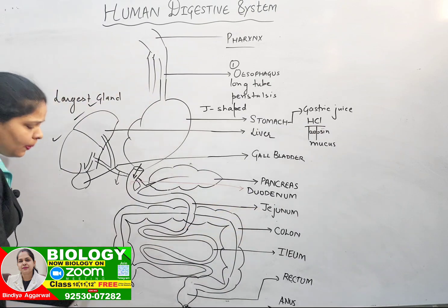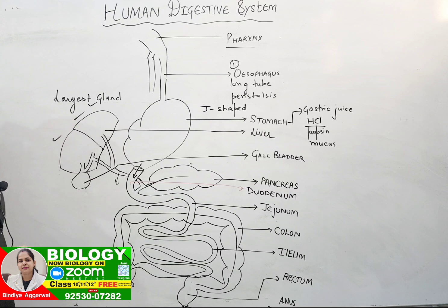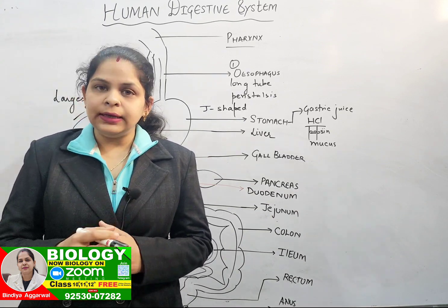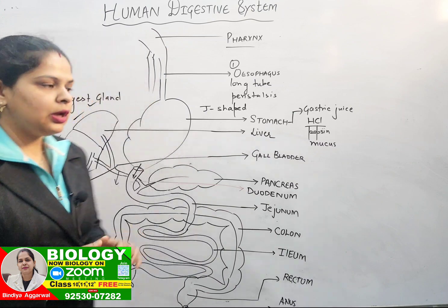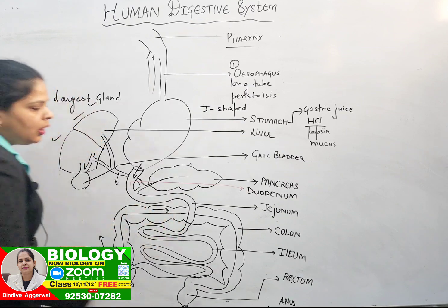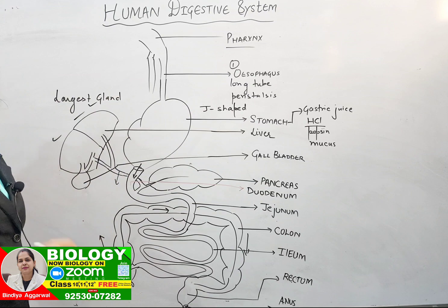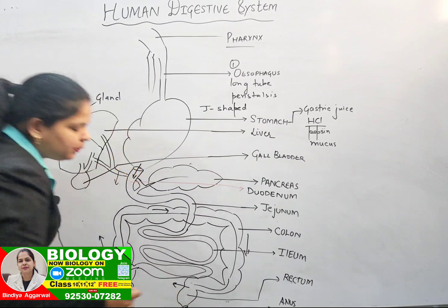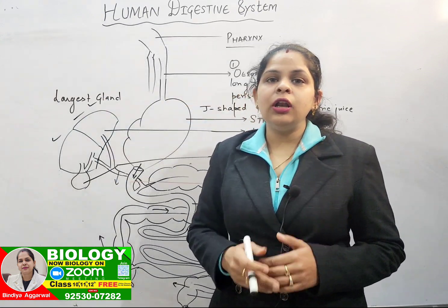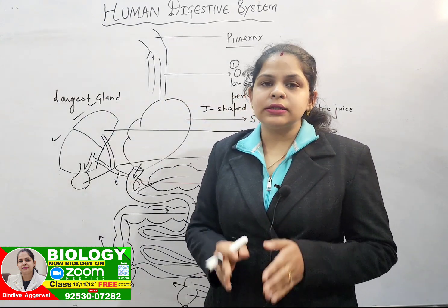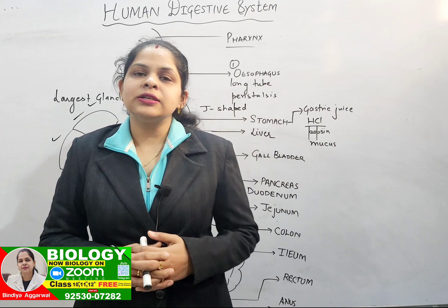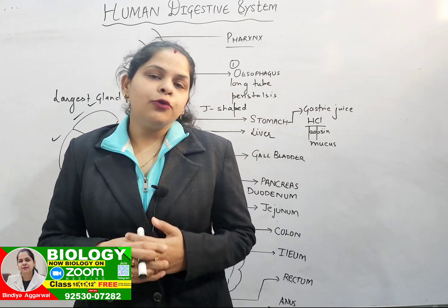The undigested food then passes to the large intestine. Parts of the large intestine include the ascending colon, transverse colon, descending colon, and sigmoid colon. Further along is the rectum, another part of the alimentary canal, where undigested food is stored for some time before passing out through the anus. This covers the complete digestive system in human beings for class 10.